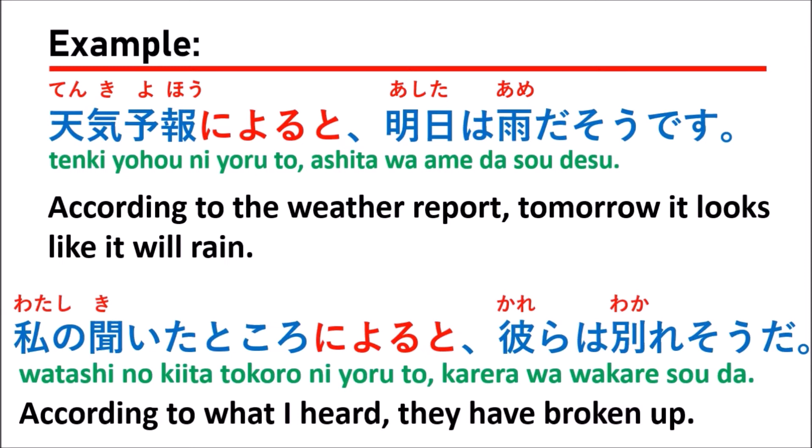In this sentence, our noun is quite long: 私の聞いたところ, which means 'what I heard from.' So によると彼は分かれそうだ means 'according to what I heard from.' Sometimes you already asked a person and got some information, so you can say to another person, according to the information you heard, that 彼は分かれそうだ — they have broken up.